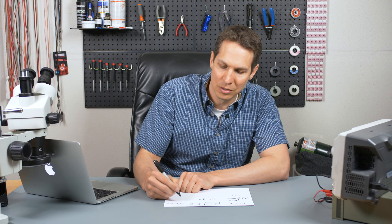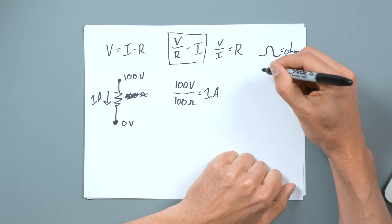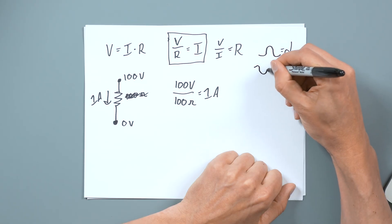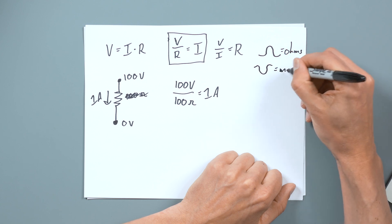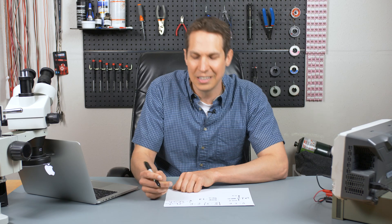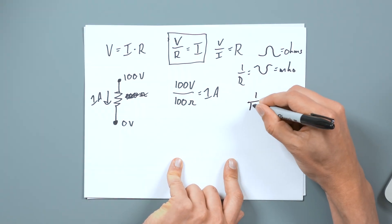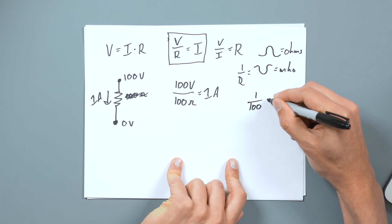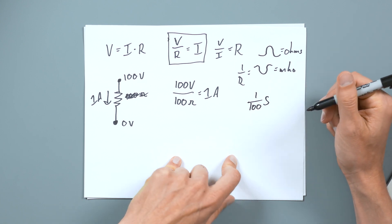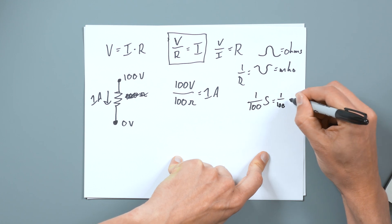Now there's actually something out there that is called a Mho and it's an upside down Omega. And that is one over R. And that is called conductivity. And that can be Mhos or Siemens, whatever you want. So 100 Ohms would be one over 100 Siemens or you can also do one over 100 Mhos.